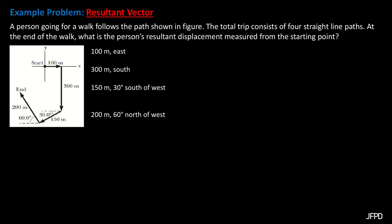Then followed by 150 meters in a direction of 30 degrees south of west. For the direction of 30 degrees south of west, it means that this is a 30-degree angle measured from the west going to the south — that is, west represents the reference direction and south is the direction of motion.